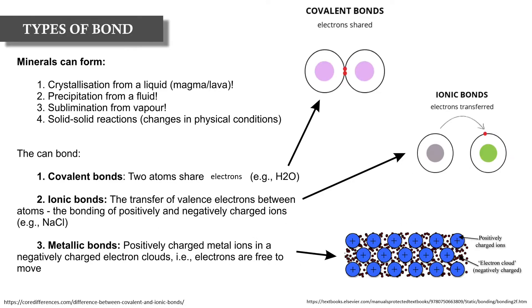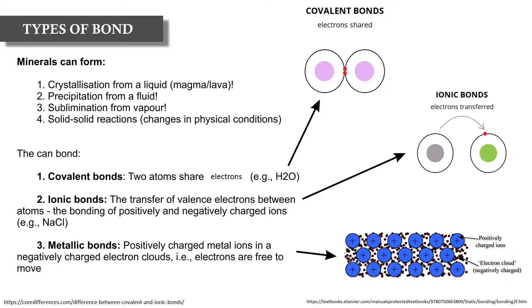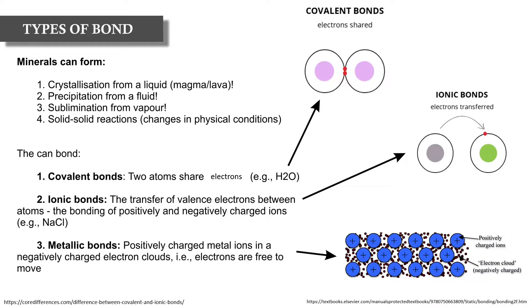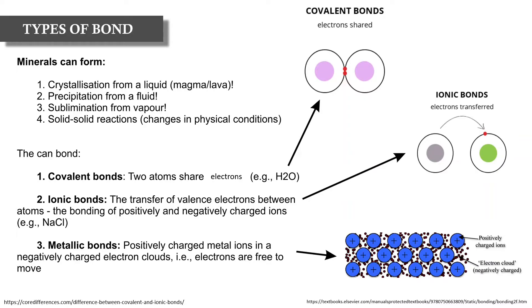Minerals can form in a few ways: the most common being crystallization from a liquid, i.e. a magma or lava; secondly, precipitation from a fluid, such as a hydrothermal fluid exsolved from a granite; three, sublimation from a vapor — think of things like black smokers; and four, from solid-solid reactions which occur in response to physical changes such as metamorphism or diagenesis.